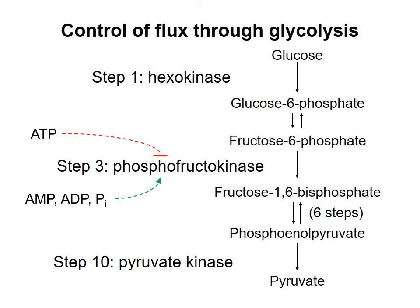The cellular concentrations of these compounds reflect how much available energy the cell has. When ATP concentration is high, the cell has a lot of energy, and there's not much need to do glycolysis, which is mainly about making more ATP. When ADP, AMP, and phosphate concentrations are high, the cell is low on energy, and glycolysis is favored as a way to make more ATP.